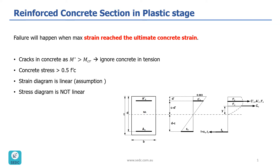Let's look at the behavior of a reinforced concrete section in plastic stage. As the bending moment increases, beam behavior will change from elastic stage to elastoplastic stage, then to plastic stage, and finally to failure. It's important to note that failure will happen when the maximum concrete strain reaches the value of 0.003, which is the ultimate concrete strain.